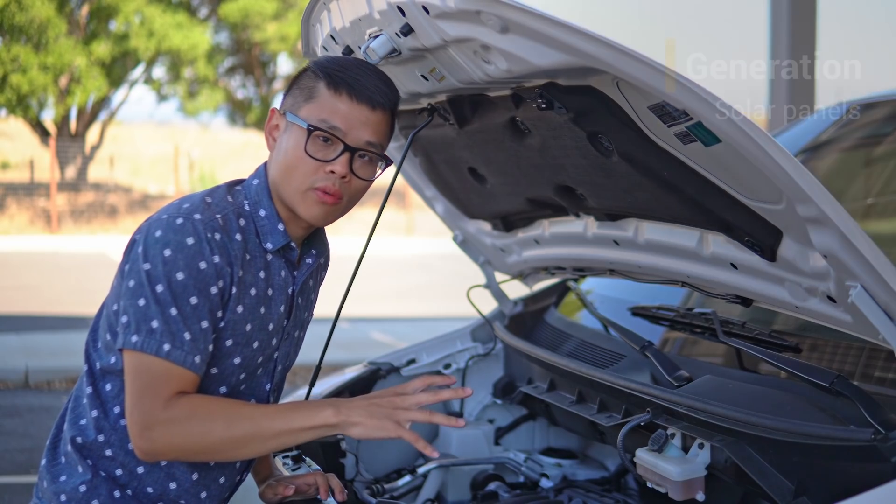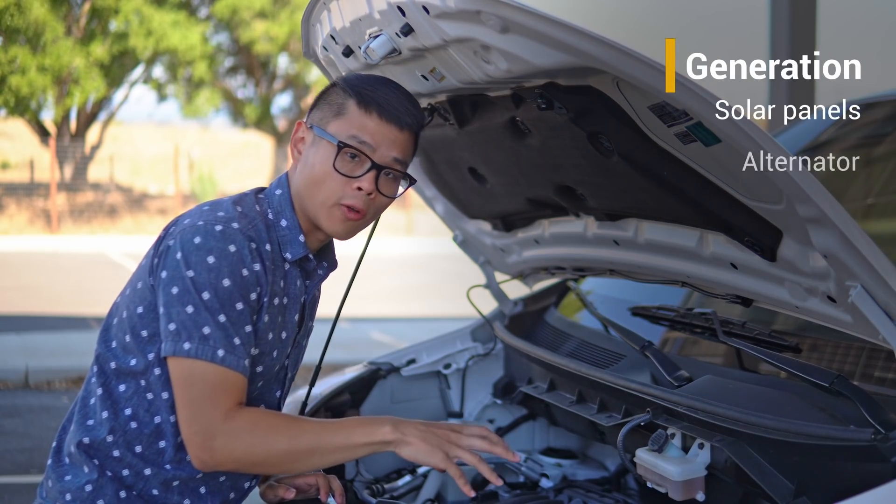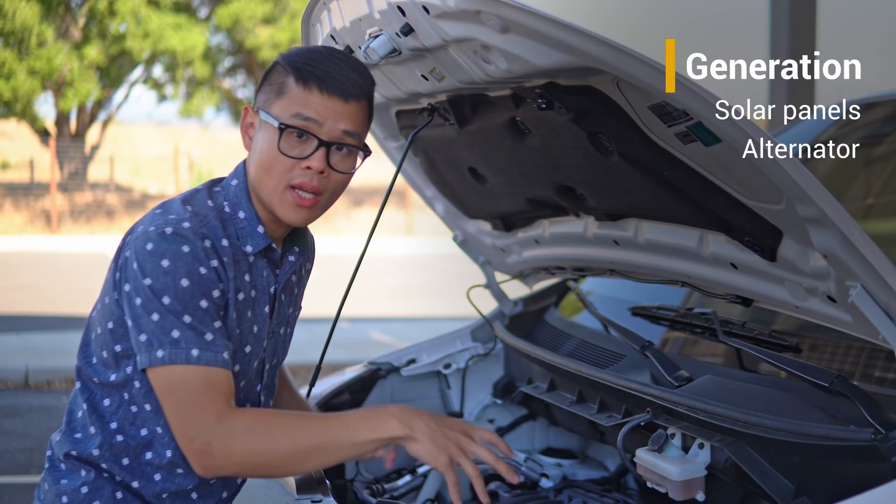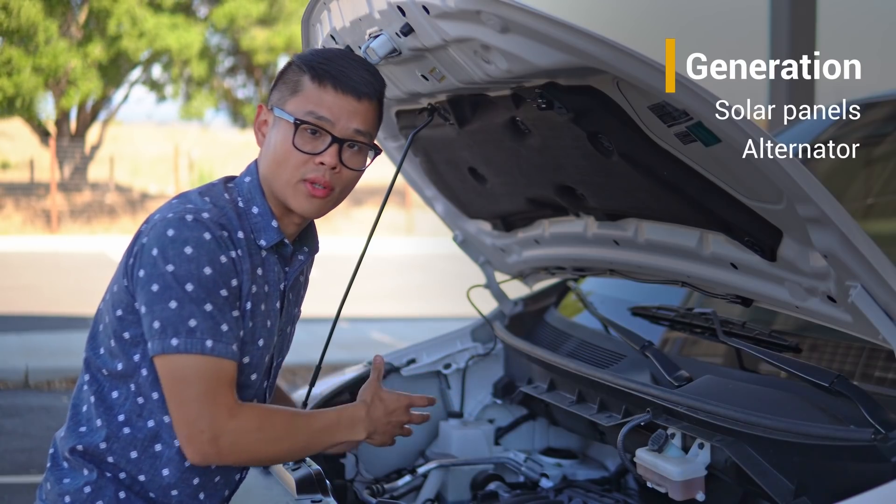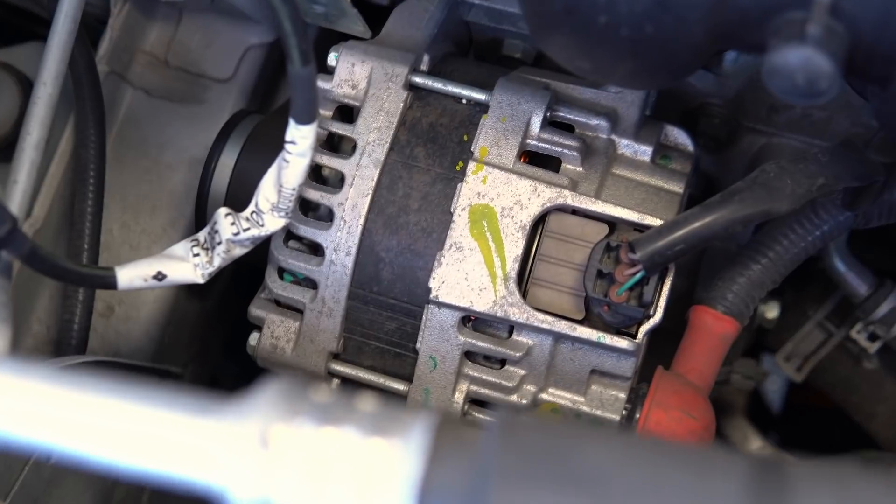Our next option for power generation is tapping into your car's alternator. Every car has a starter battery which provides power to kickstart the engine. When the engine is running, there's a belt that drives mechanical motion to the alternator and that produces electricity to charge the starter battery.